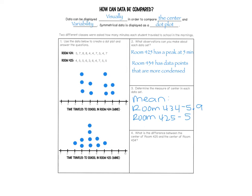Question four says: what is the difference between the center for room 425 and room 434? So we're just going to subtract the two — 5.9 minus 5 gives us 0.9 for our difference.